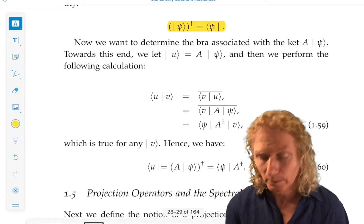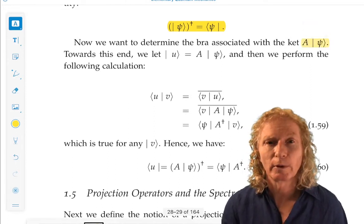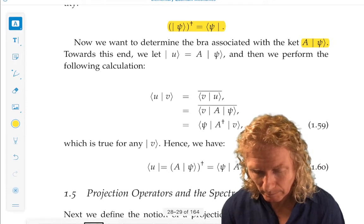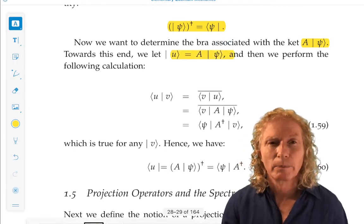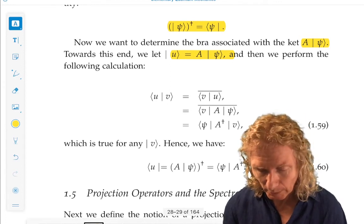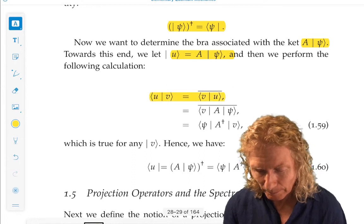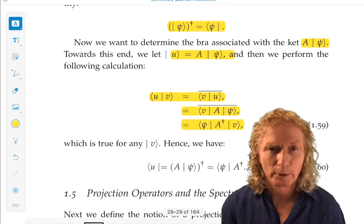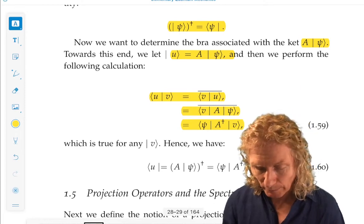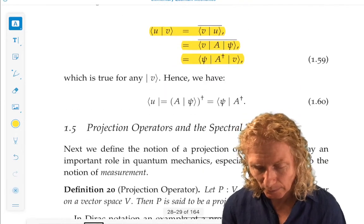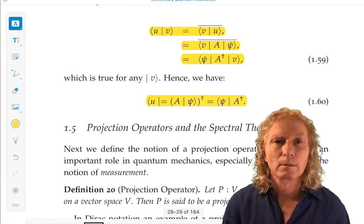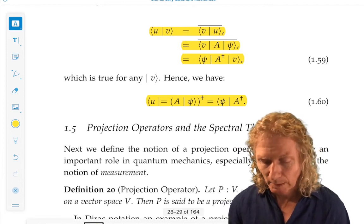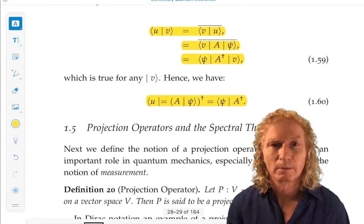We can go through this other calculation, and ask ourselves, what is the Ket associated with the operator A acting on the Ket Psi? Let's simplify this by letting Ket U equal A Ket Psi, plug it into the Dirac inner product. This is essentially the first two lines of the calculation that I just did. You can easily conclude that the Bra associated with the Ket A acting on Ket Psi is Bra Psi A adjoint on the right.